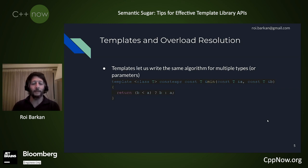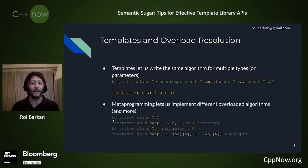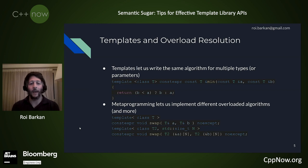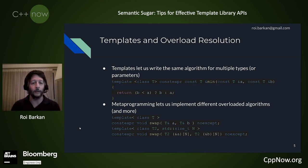Template metaprogramming is a trick that allows us to do things a little more tricky. Like in this example with the swap algorithm, where if you want to implement the same semantics for a single object or for an array of objects, we need to write different code. We can see that it was possible even in C++98 — we just write two overloads with different template arguments, and the compiler knows how to choose the correct code.